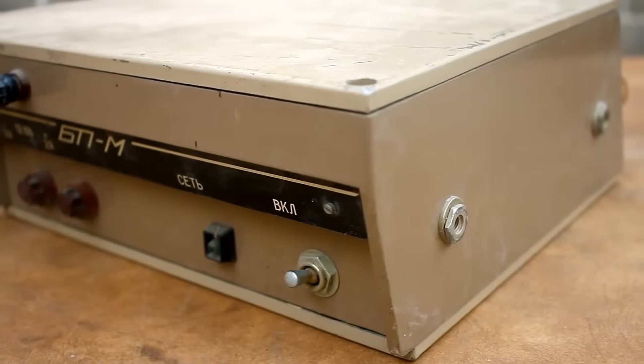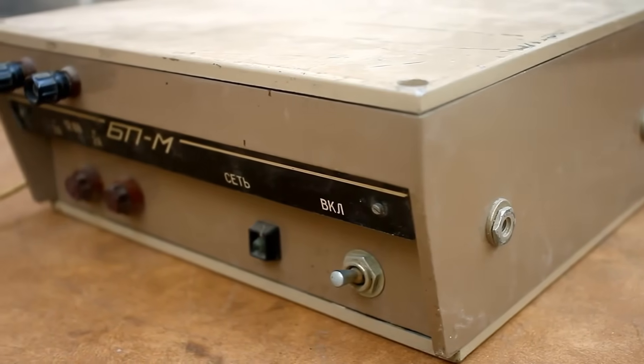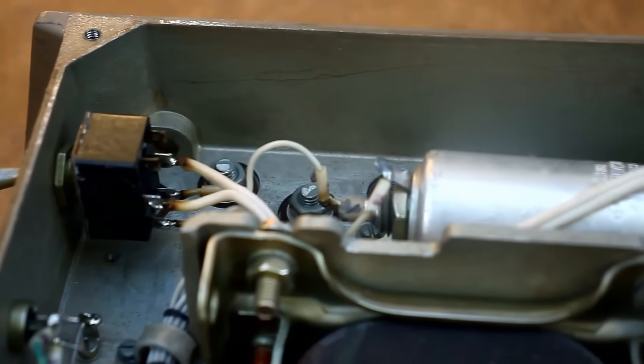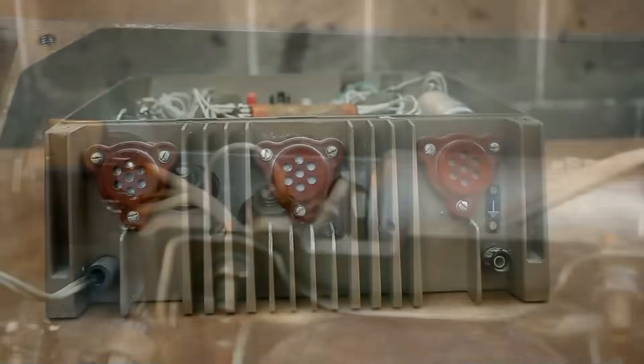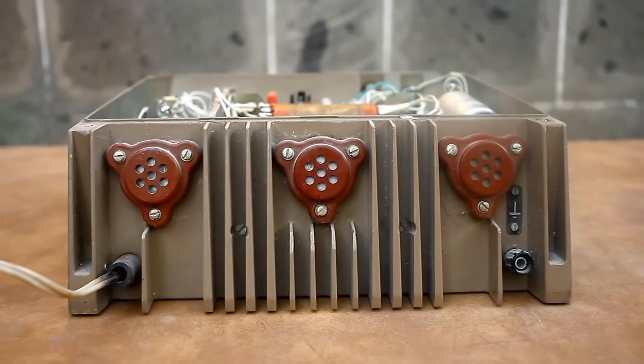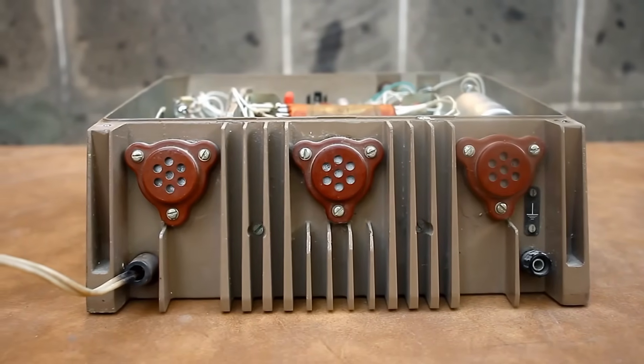Regarding the casing, I think everything is clear. It is made entirely of duralumin and has extremely high strength. At the same time, it serves as a cooling radiator for the powerful power switches located at the back.